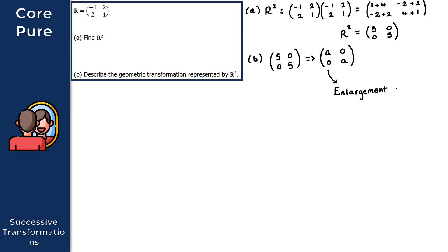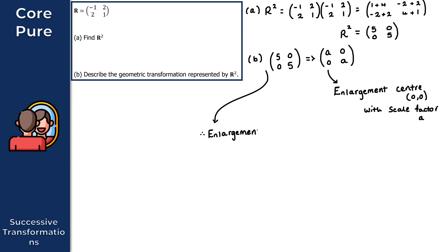We have an enlargement with center (0, 0) and a scale factor of A. Applying that to our matrix, where A equals 5, we have an enlargement with center (0, 0) and scale factor 5. That gives us the solution to question 1.